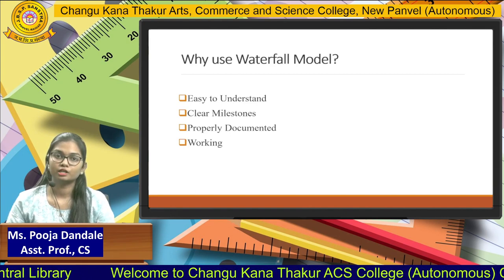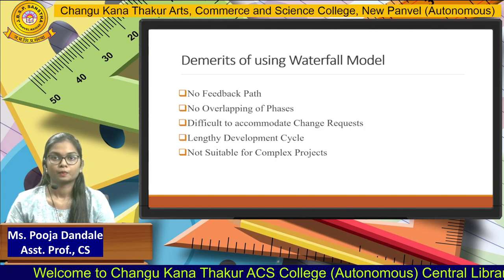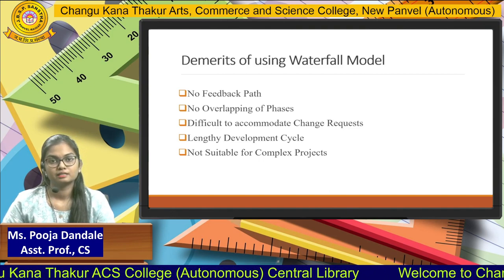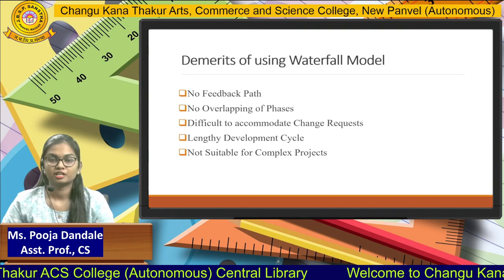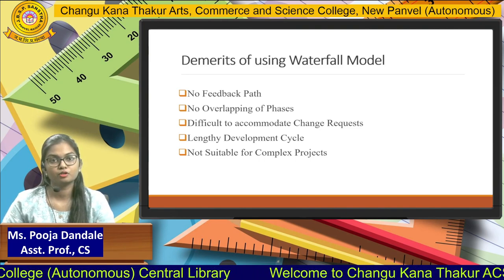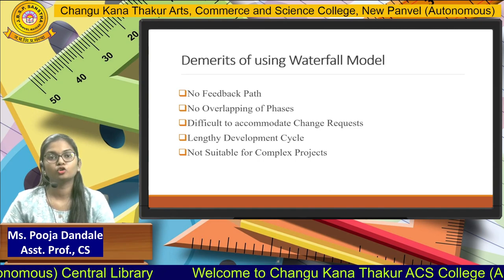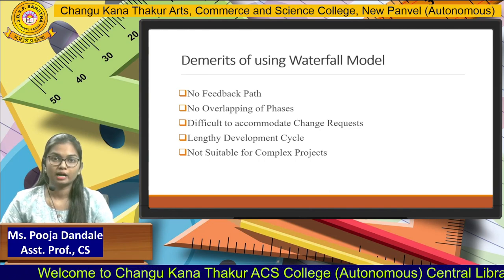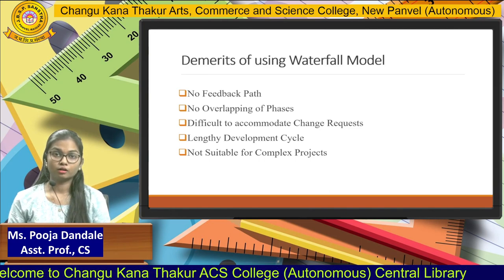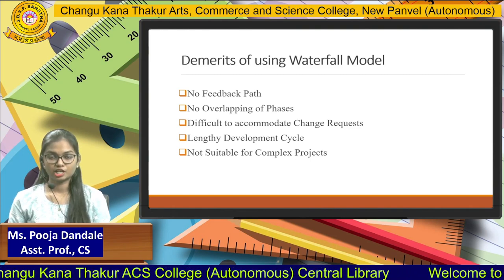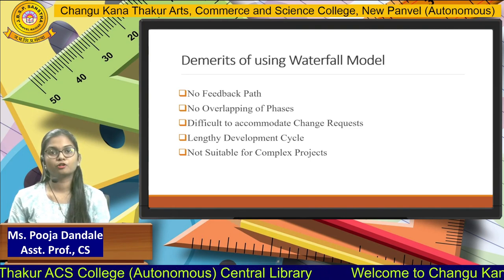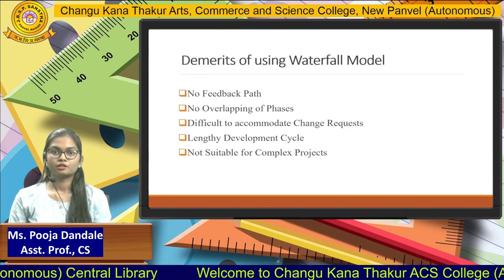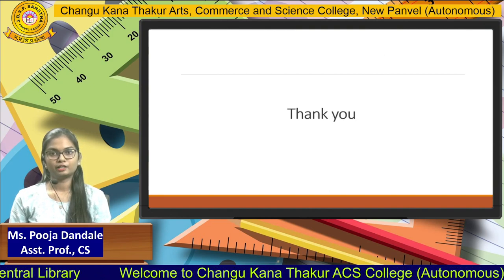The demerits of the waterfall model are: since we go step by step phase by phase, once we move from one phase to another you cannot go back. It will be a very lengthy process, there is no overlapping of phases, and it is difficult to accommodate change requests in the middle. We have to wait for all things to be done before making changes. That's all for the waterfall model, thank you students.